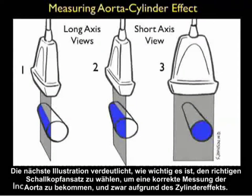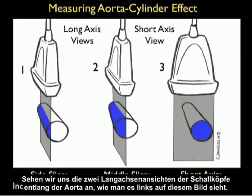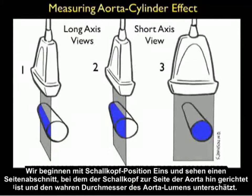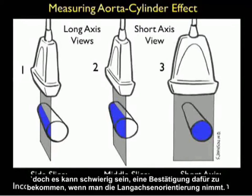This next illustration makes the point that choosing the correct probe orientation is very important in terms of getting a correct measurement of the aorta due to the cylinder effect. Looking at the two long axis views of the probes along the aorta shown towards the left of the image, beginning in probe position one, we see a side slice in which the probe is positioned towards the side of the aorta, underestimating the true diameter of the aortic lumen. Positioning the probe towards the middle as shown in probe position two will get a correct diameter, but this can be difficult to ascertain using the long axis orientation.